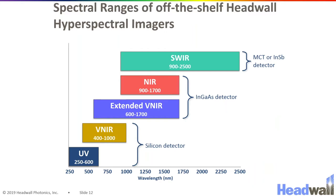Finally, here is an overview of the different products in Headwall's hyperspectral imaging catalog, categorized by the spectral range that they cover and also the detector technology used in the focal plane array for each sensor. Our most common sensors are the visible near-infrared sensors that cover 400 to 1000 nanometers, and those all use silicon detectors, which are the most common and most well-developed detector technology.